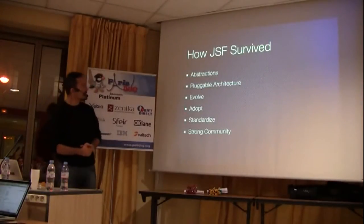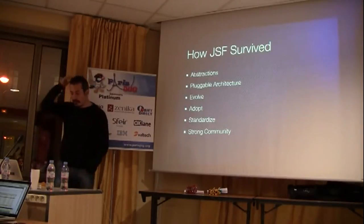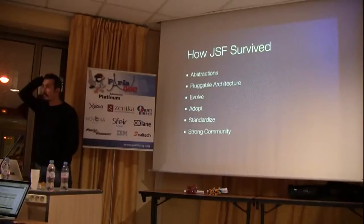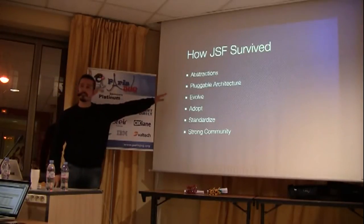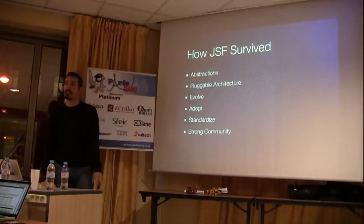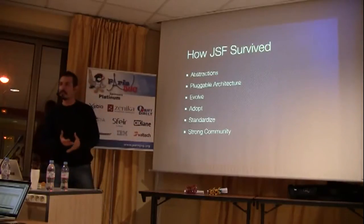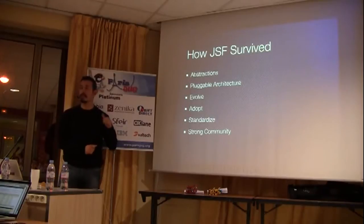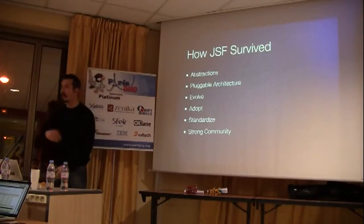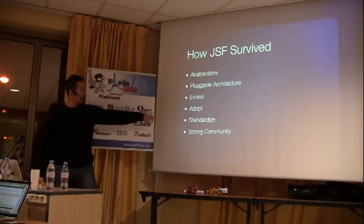So this is how JSF survived. There are some abstractions and a pluggable architecture so that extension writers and framework writers had the ability to hook into JSF, write their own stuff and extend it — like bringing Ajax to JSF 1. View renderers, navigation handlers and so on. JSF evolves, although there is a JCP process which can be slow sometimes. It managed to evolve, and in JSF 2, it adopted Ajax and all the new cool things the web brought us and keeps standardizing them.